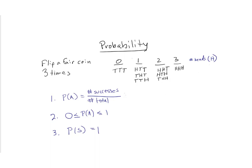Let's ask a particular question: what's the probability of getting one head on three flips of a coin? How many ways can I get one head? There are three different ways to possibly get one head. So the number of successes is 3, divided by our total of 8 outcomes from flipping a coin three times. That's 3 divided by 8, or 37.5% — the probability of exactly one head.